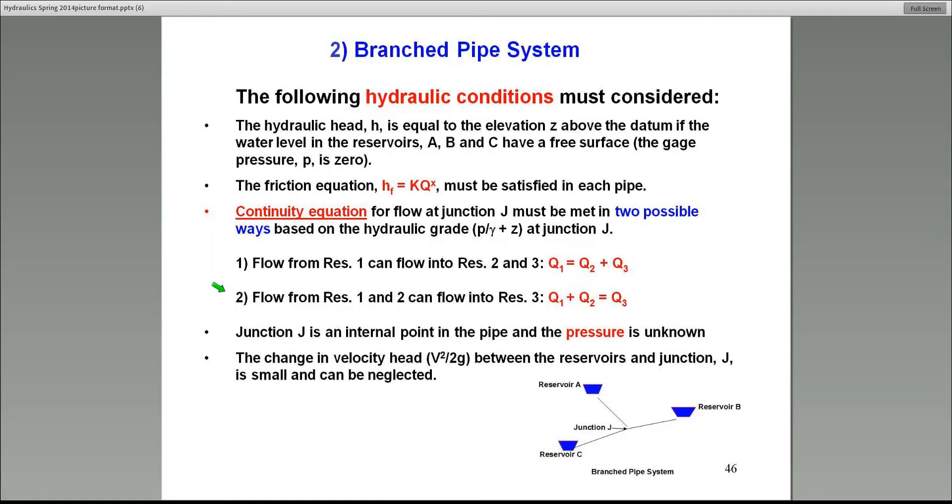The problem is that the continuity equation can take on two forms depending on which way the flow goes. For example, there are two possible scenarios. Reservoir A and B can combine to feed flow into reservoir C. In that case, the flow coming in from pipe one, pipe two, add up to give you the total flow going out. Usually that's from the law of mass balance or equation of continuity. But as you will see, since we do not know what the pressure head is here, or the hydraulic head is at junction J, that's the unknown.